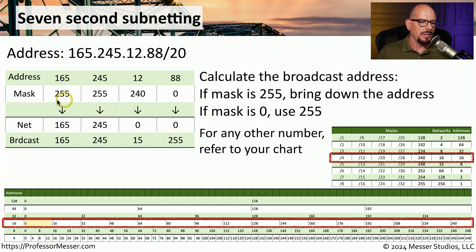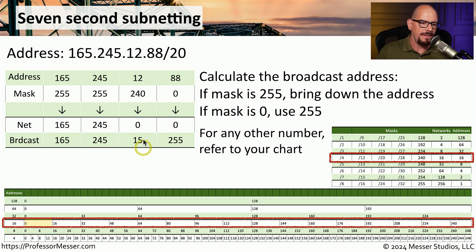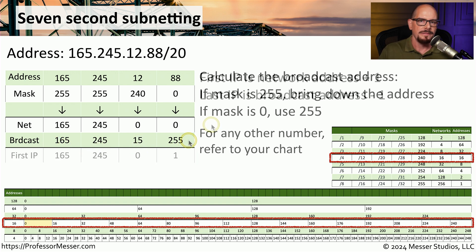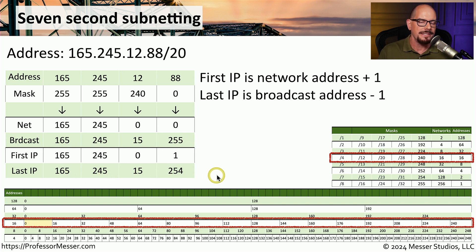To calculate the broadcast address, wherever the mask is 255 we bring down the address, and wherever the mask is zero we use 255. That gives us 165.245 for the first two octets and 255 for the fourth. Since we have a 240 in the third octet, we refer to our chart: there are 16 addresses per block, so the next subnet starts with 16, meaning one number prior is 15. The broadcast address is 165.245.15.255. The first available IP is 165.245.0.1, and the last available IP is 165.245.15.254.